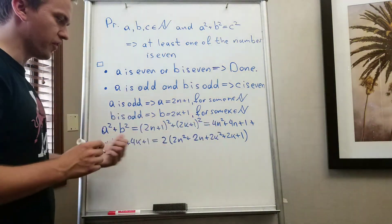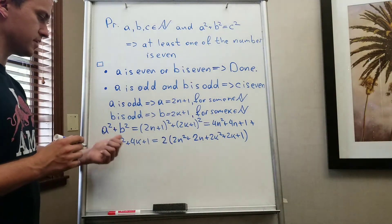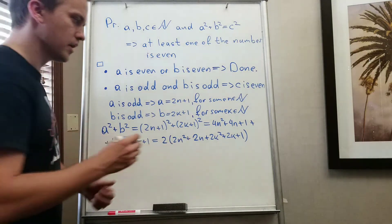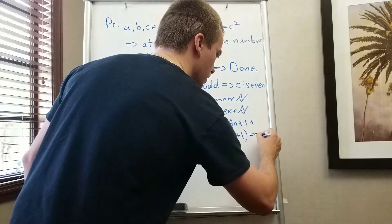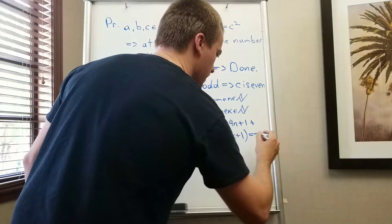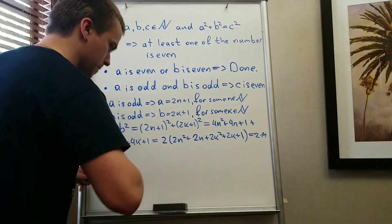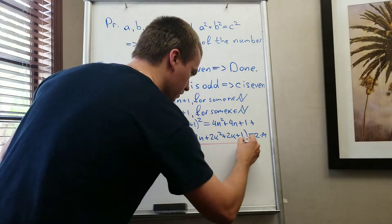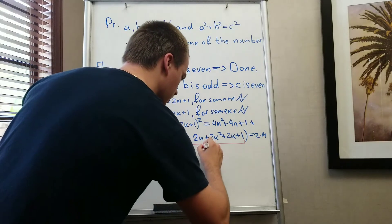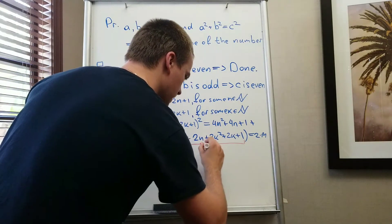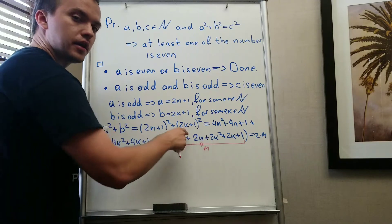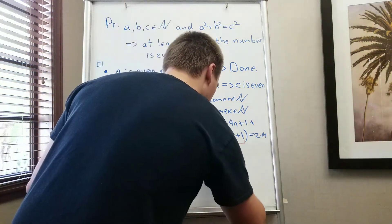And you know that the whole thing, a squared plus b squared equals 2 times some number. So we can say 2 times, let's say m, where z is the whole thing equals to m.